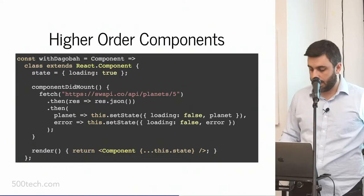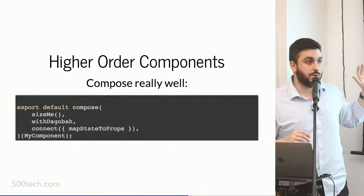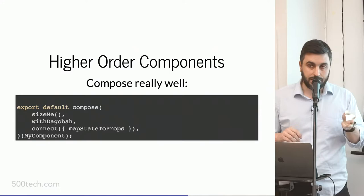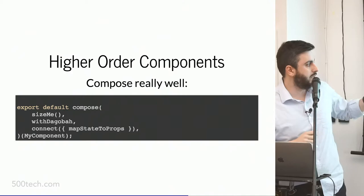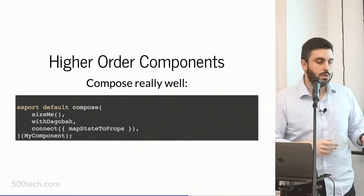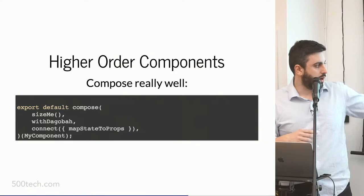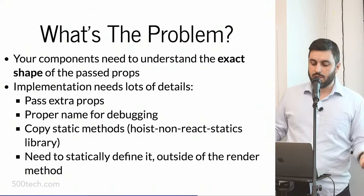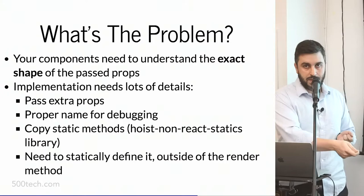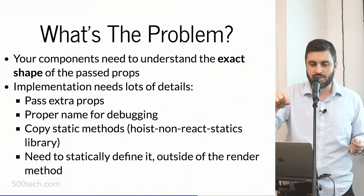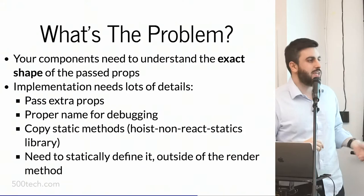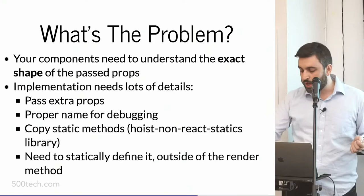The implementation is also relatively simple — we have the state, we have the side effects, and it's a function that receives any component, mounts, and passes props. Higher-order components compose really well — I can enrich my component with three different HOCs: 'size me', which gives info about the current size of the component; 'my Dagobah'; and 'connect', the most famous HOC. The problem is your component needs to understand exactly what shape of props are being passed. Sometimes HOC code infects your business code — if you use 'size me', it injects a particular size prop and your component needs to understand that. Also, the implementation has a lot of detail: you need to pass extra props, set proper names for debugging — it can get a little bit hairy.